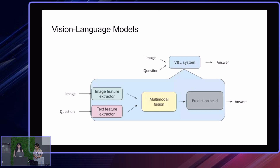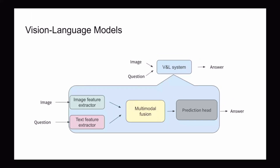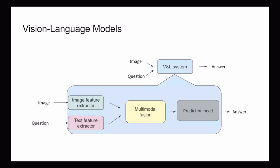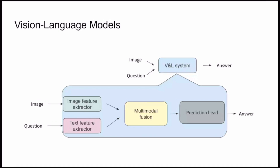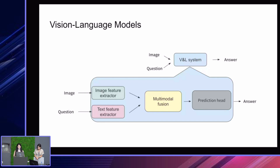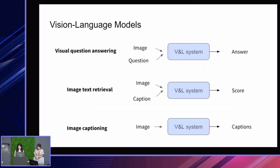So a bit of an introduction of what vision language models are. The main components of a vision language model system involve having an image feature extractor that processes the image, a text feature extractor that processes the text, and then these are combined together in a module that essentially tries to align the representations for the image and the text. On top of the multimodal fusion, we have a prediction head.